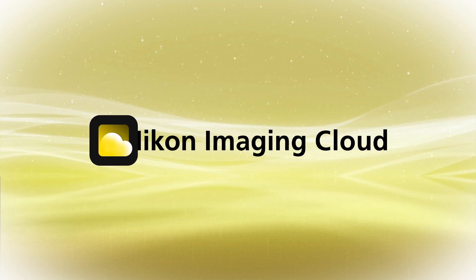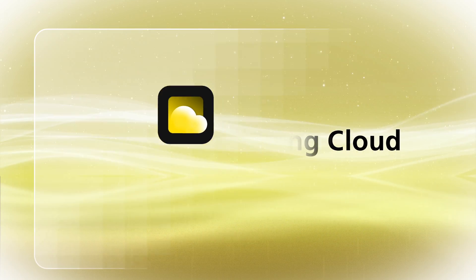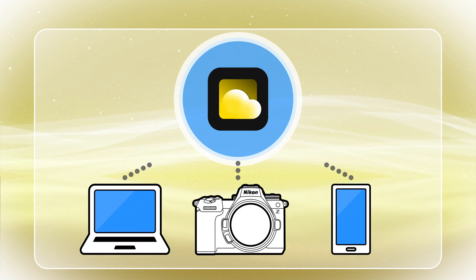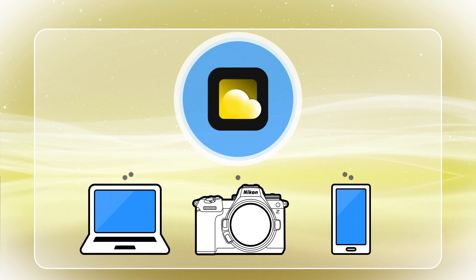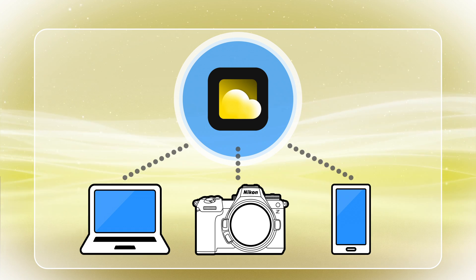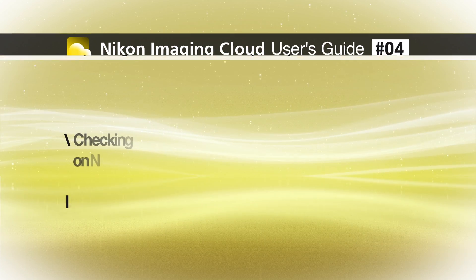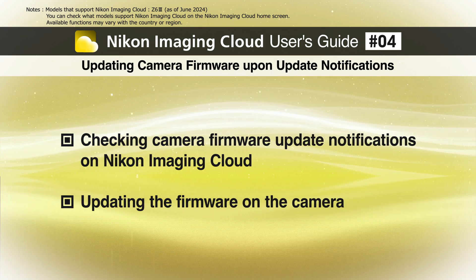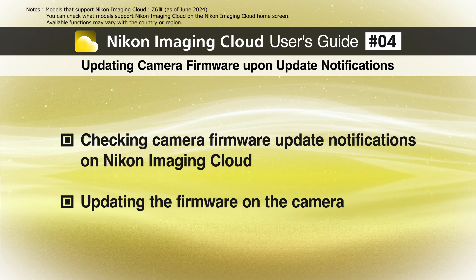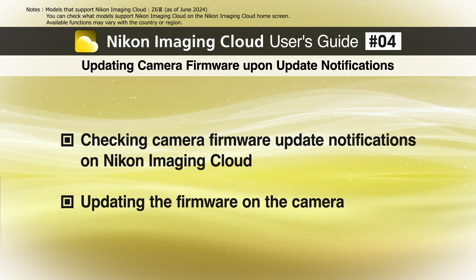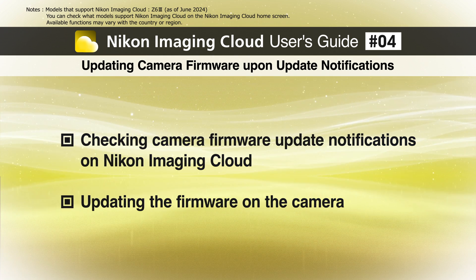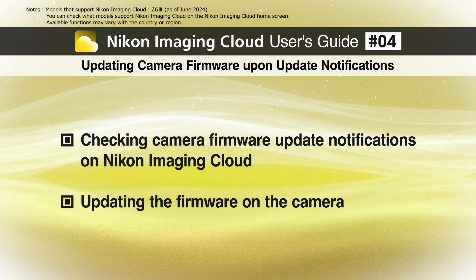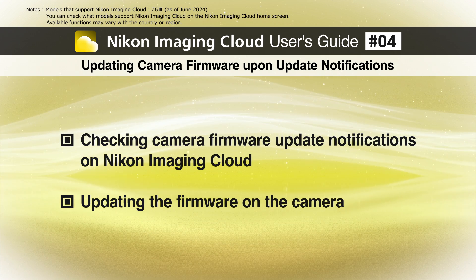Nikon Imaging Cloud is Nikon's cloud service that can be accessed and used from cameras, computers, or smart devices with a Wi-Fi connection. In this video, you will learn how to check camera firmware update notifications on Nikon Imaging Cloud, as well as how to download the firmware directly from Nikon Imaging Cloud and perform updates by operating the camera.